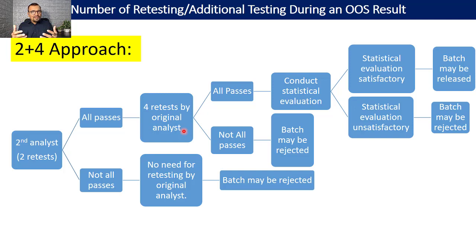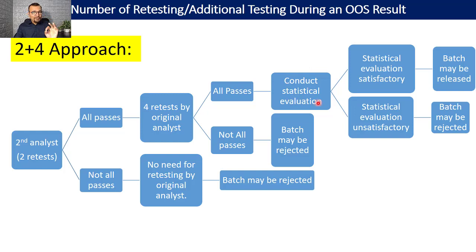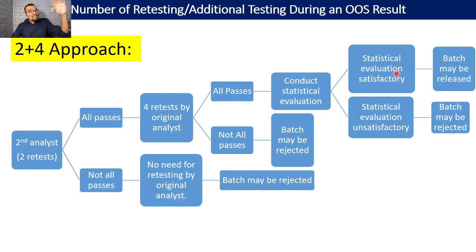More preparations give extra confidence to both the analyst and the quality unit. If all four results from the original analyst pass, then statistical evaluation must be conducted — percent RSD and 95% confidence limit evaluation. If the statistical evaluation is satisfactory, meaning percent RSD meets your validation requirement and the six measurements meet your acceptance criteria for precision, you can consider releasing the batch.